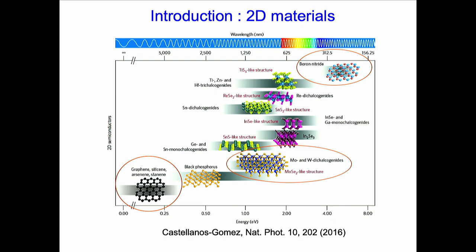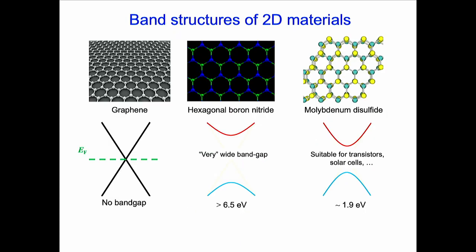My group is mostly working on three materials. Graphene with zero band gap, whose famous linear band crossing makes it exciting for physics but not so exciting for semiconductor applications because there is no gap. Boron nitride with an extremely large band gap — it's rather an insulator. And the transition metal dichalcogenides, which fall somewhere in the middle.